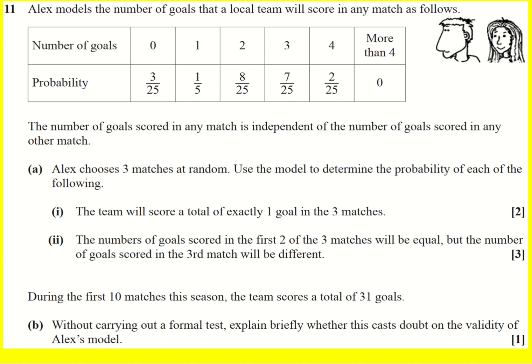We have the probability model that Alex has made for the number of goals that a local team has scored in a match. So 0 to 4, different probabilities, more than 4 is 0. This is a model, so you have to make certain assumptions. For example, the fact that the number of goals in a match will be independent than the number of goals in another match.